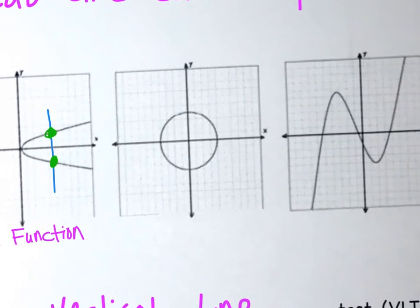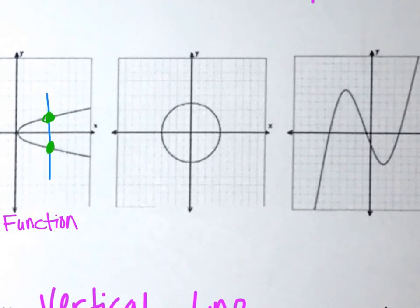Second one. Also, if I pick anywhere on the graph, I draw a vertical line straight up and down. Now I'm going to go back and see where did this touch? It touched twice, which is no, not good. This one also is not a function.